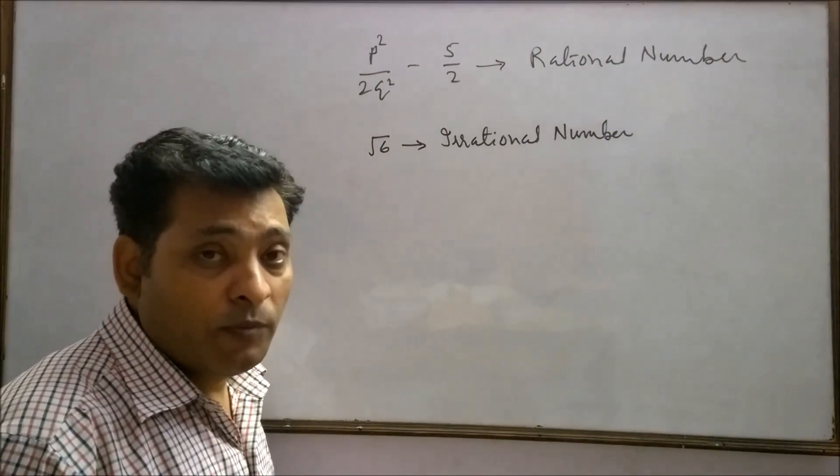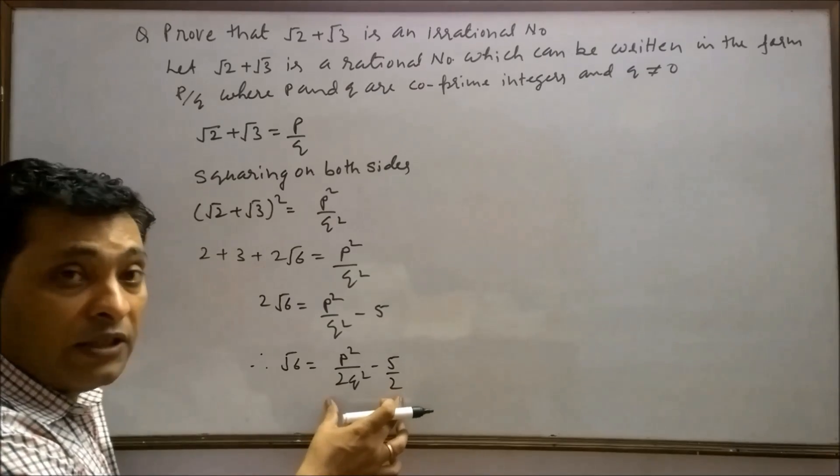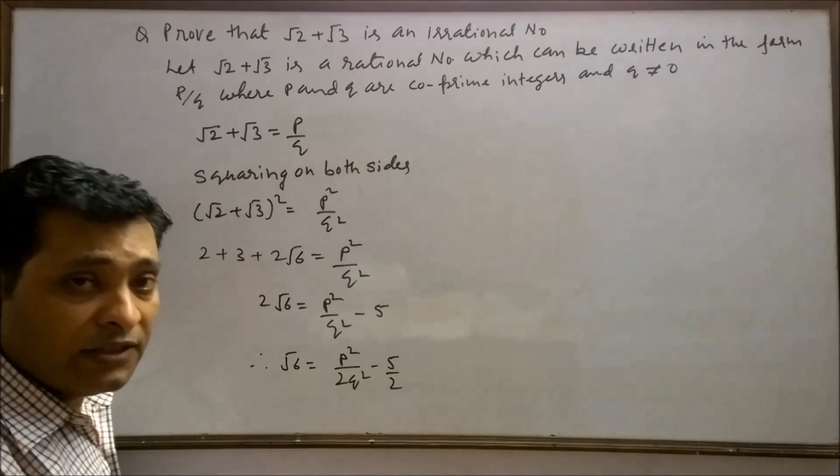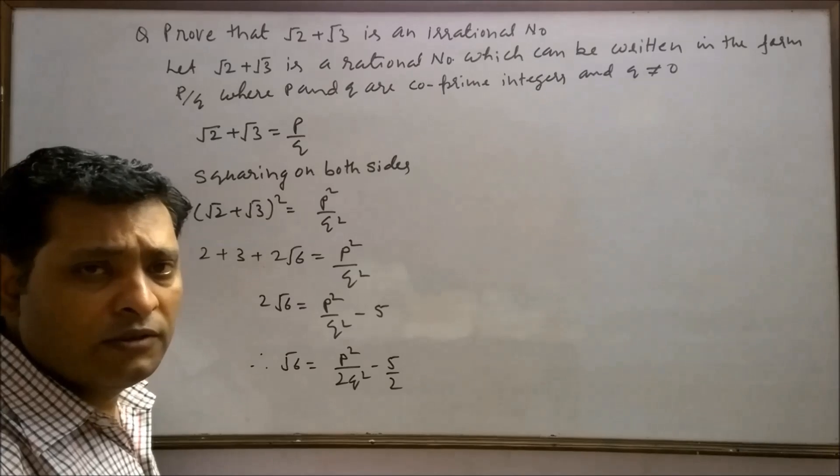So student, come to the point again. This number is none other than a rational number, but we know that root 6 is an irrational number. So contradiction has arisen.